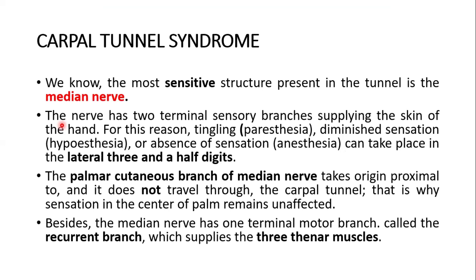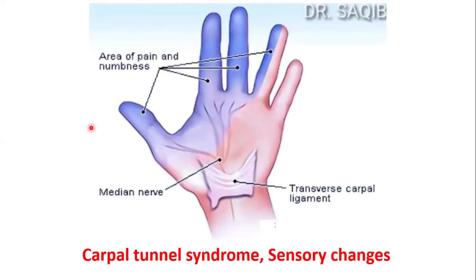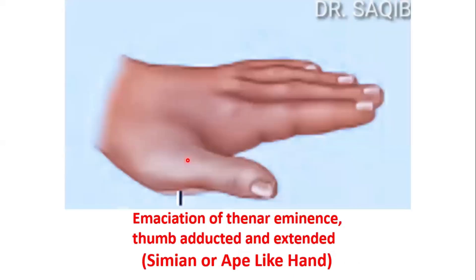The median nerve has one terminal motor branch called the recurrent branch, which supplies the three thenar muscles. Late motor symptoms include wasting of the thenar eminence, with the thumb adducted and extended — producing the simian or ape-like hand deformity.